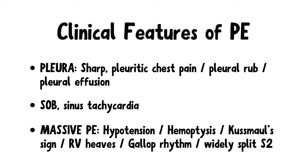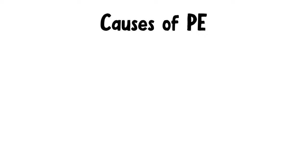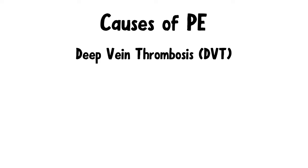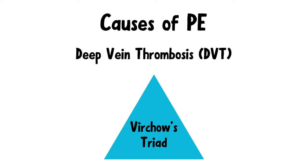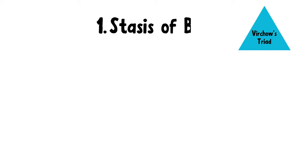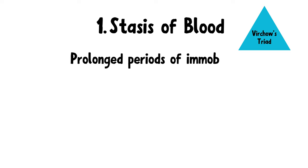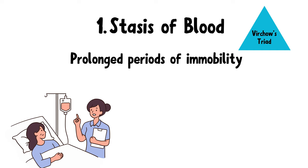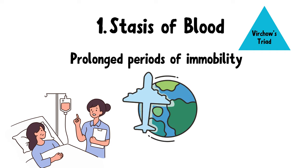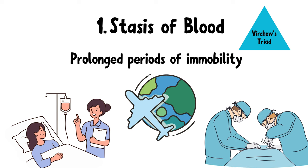Now let's have a look at the causes of pulmonary embolism. A pulmonary embolism usually stems from a deep vein thrombus — so what causes deep vein thrombosis? There are three factors that contribute to the formation of thrombi, and we call this Virchow's triad. The first is stasis of blood. When your blood is in stasis, clotting factors can accumulate and lead to the development of clots. Stasis can occur during prolonged periods of immobility, like in hospitalized patients or during a long flight, and is also common in patients undergoing surgery.